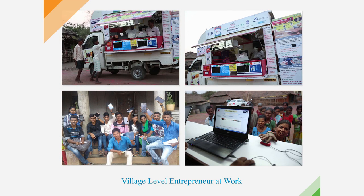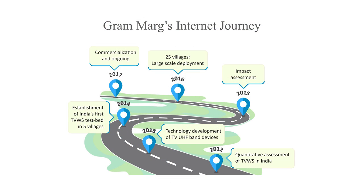These are Grammarg's important milestones to date. In 2012, we began with a quantitative assessment of TV white space in India. In 2013, we started technology development of TV UHF band devices. In 2014, we established India's first TV white space network in five villages. In 2015, we did an impact assessment study. In 2016, we scaled up to 25 villages — a large-scale deployment in villages with no connectivity at all, no 2G or 3G coverage, in tribal districts — with commercialization processes now ongoing.